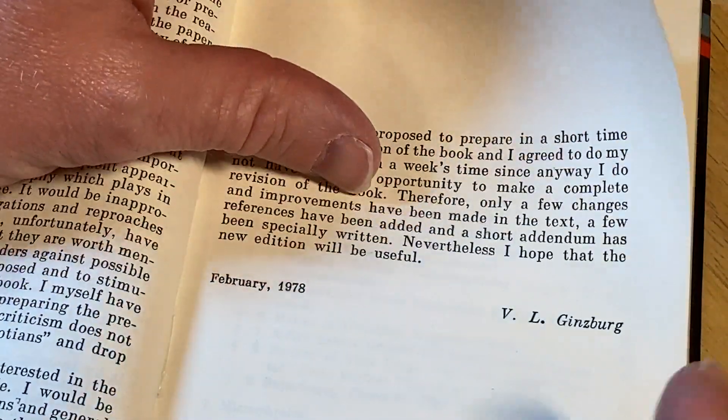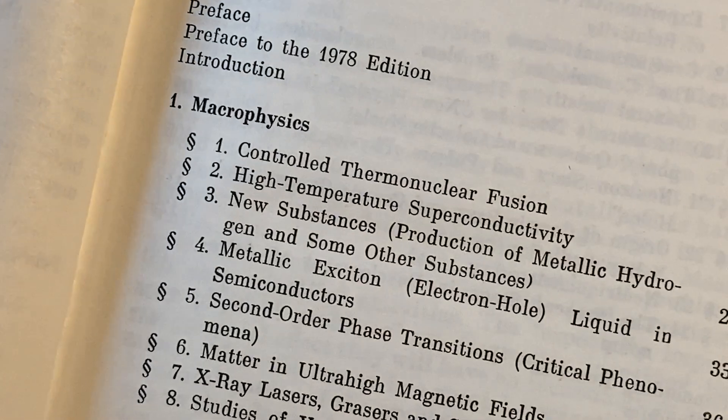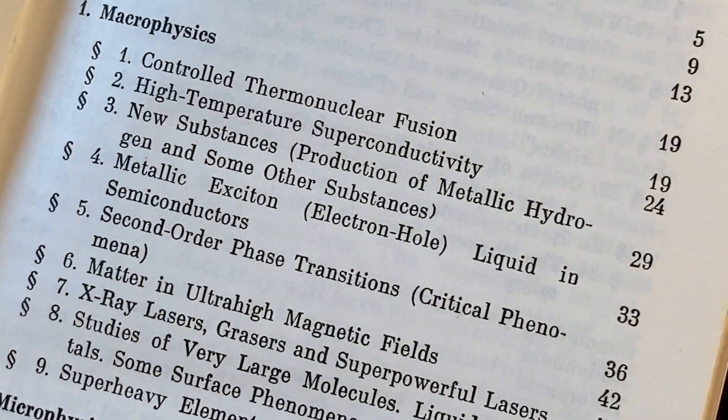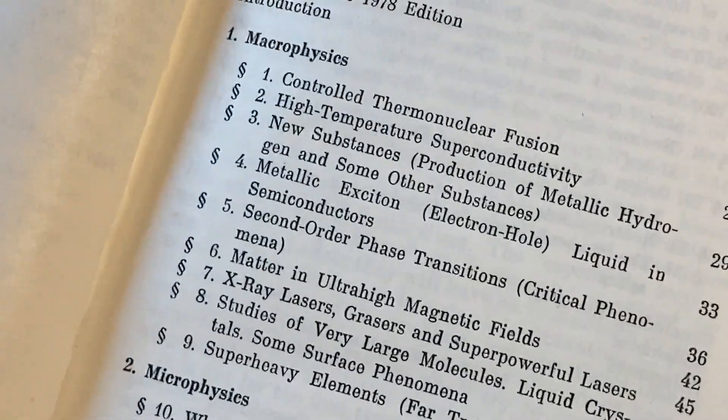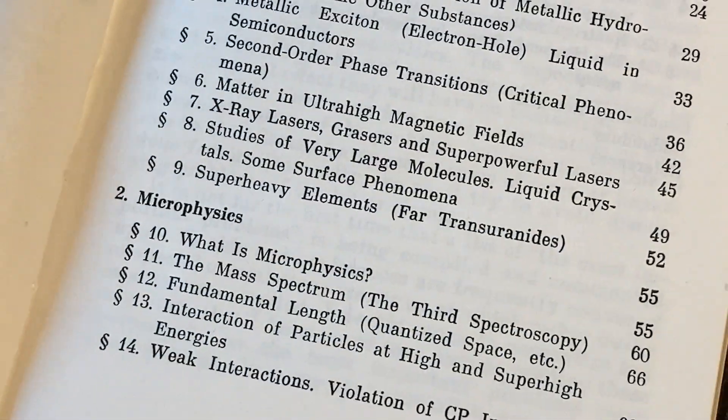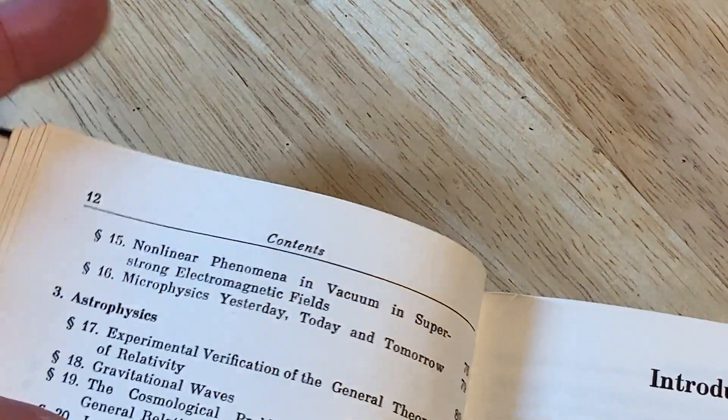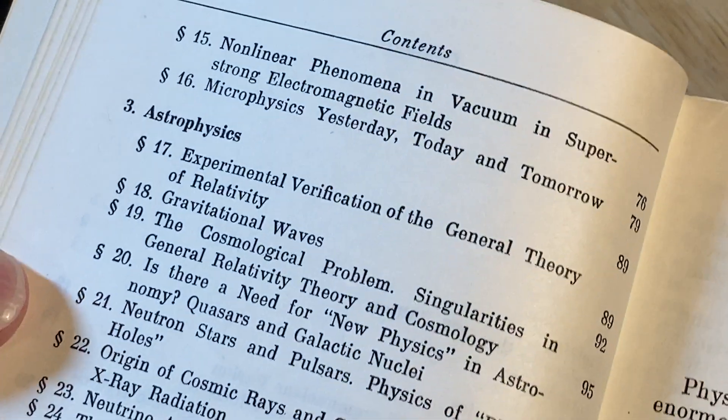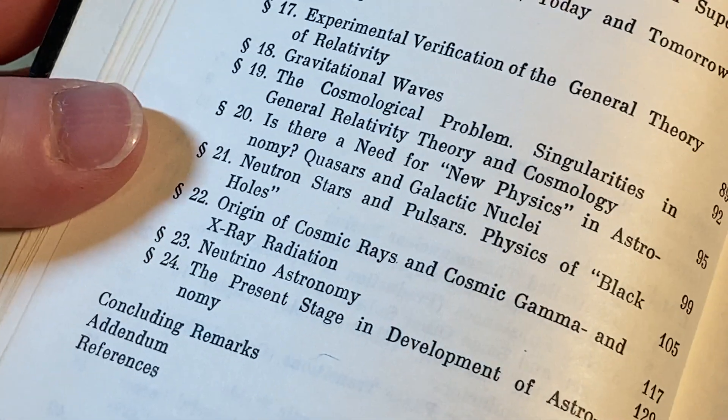And here's the preface to the 78 edition. Let's skip that. And here, here are the contents. This is interesting. So macro physics. Then we have micro physics. Turn the page here. And then we have astrophysics. And then we have some concluding remarks and addendum and references.